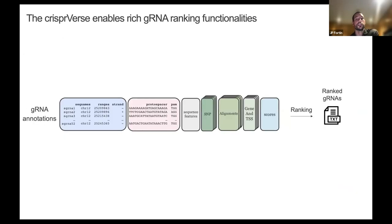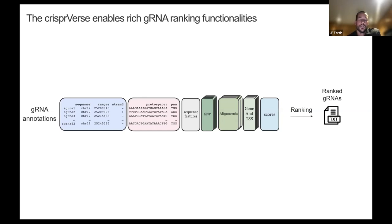Once we have all of those rich annotations, the goal is to be able to select the best guide RNAs for a given experiment. We provide different ranking algorithms based on target specificity, spacer composition, target localization, and functional annotations.